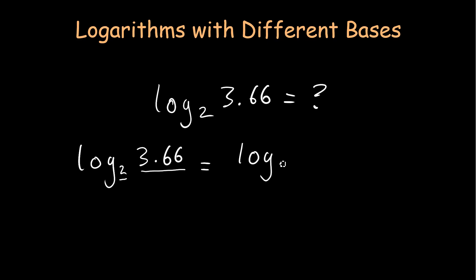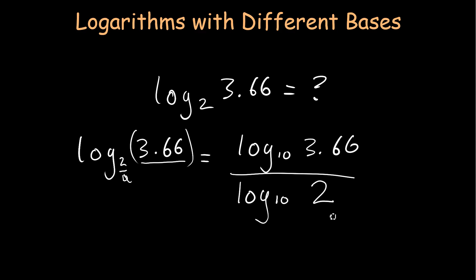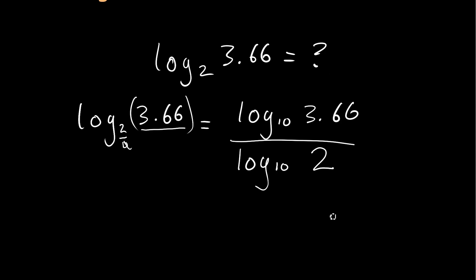So this will equal to log to the base 10 with an argument x, which is this value here, 3.66, divided by log to the base 10 with an argument of a, and this is the a value here.